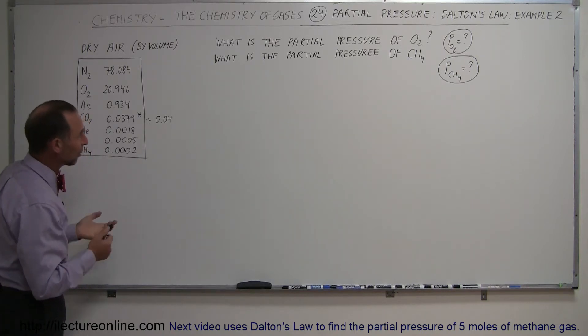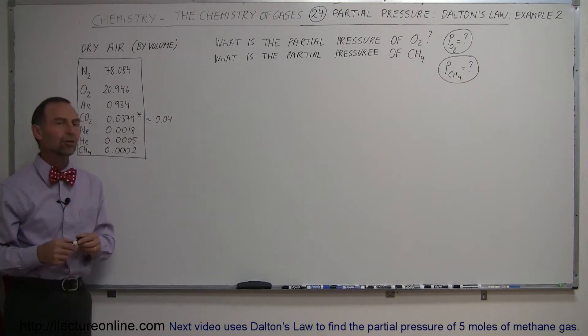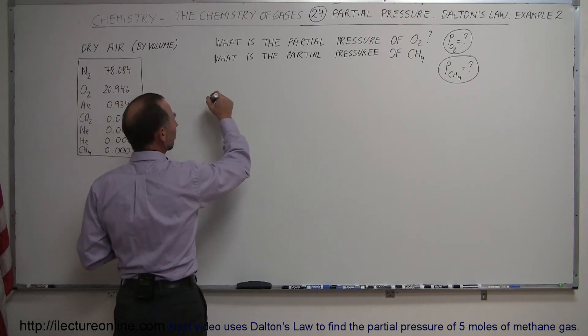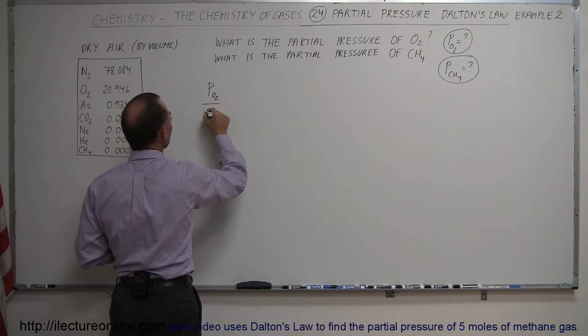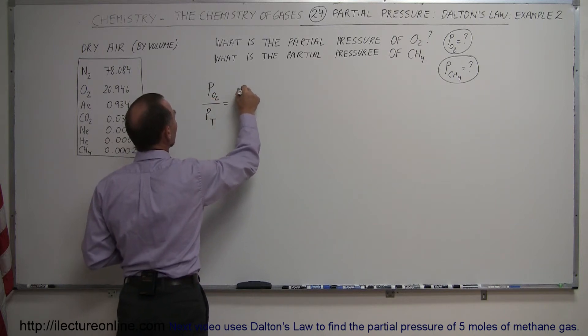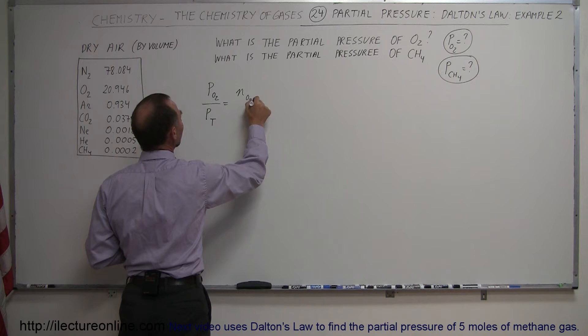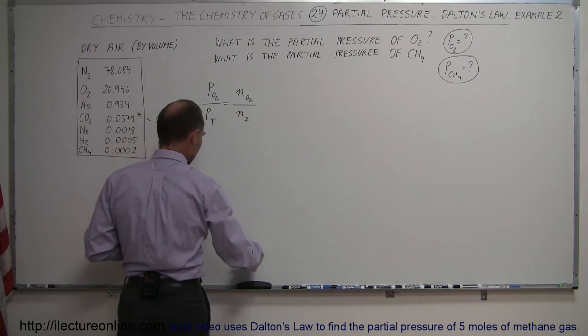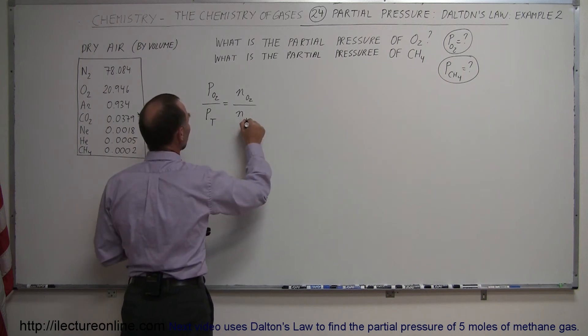So let's try to calculate the partial pressure of oxygen and the partial pressure of methane if these are the constituents of dry air. The partial pressure of oxygen gas as a percentage of the total is equal to the number of moles of oxygen gas as the fraction of the total, and I should say T, not 2, total.